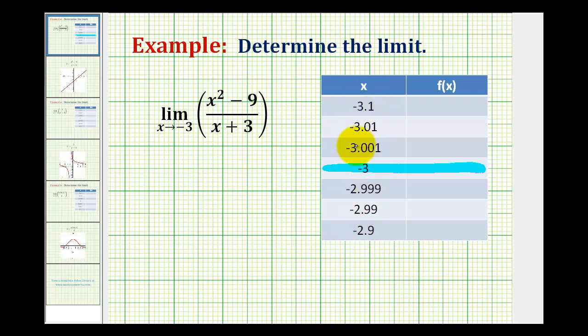Here we have three values that are less than negative three and approach negative three from the left, and here we have three values that are greater than negative three approaching from the right. I do want to briefly show how I came up with these values.